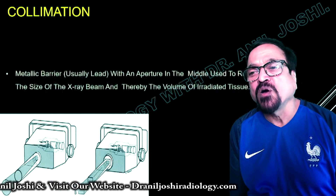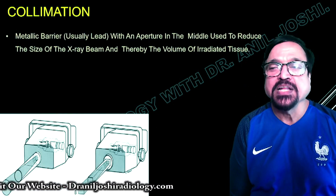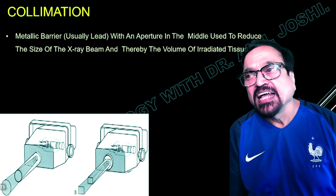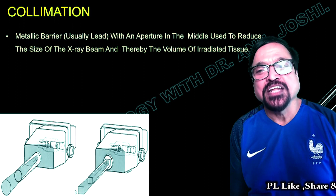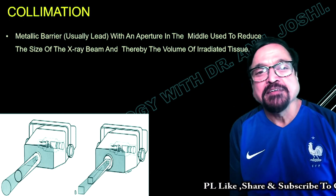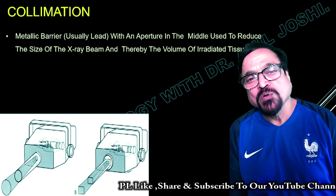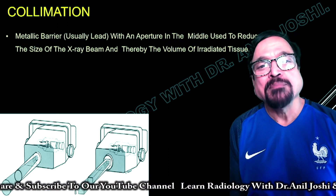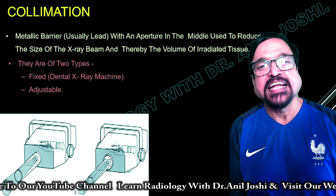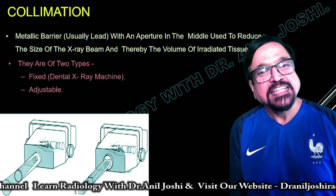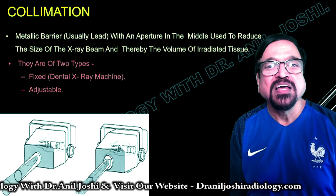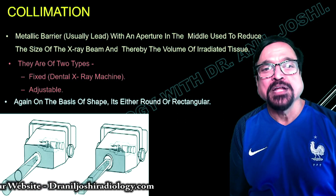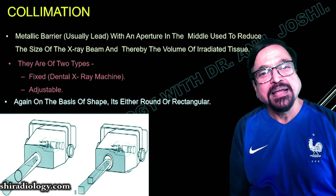What is collimation? Collimators are metallic barriers, usually lined with lead, with an aperture in the middle, used to reduce the size of the beam and thereby the volume of irradiated tissues. You do not want to irradiate tissues that are not of interest. Giving unnecessary radiation to body parts we have no interest in is avoided with the help of collimation. Good collimation is required when taking a proper X-ray, as it reduces unnecessary irradiation of adjacent structures. There are two types: fixed — as seen in dental with a cone — and adjustable, which is found in most departmental radiographic units. You can bring the flaps together or separate them, making the beam size variable as per requirement.